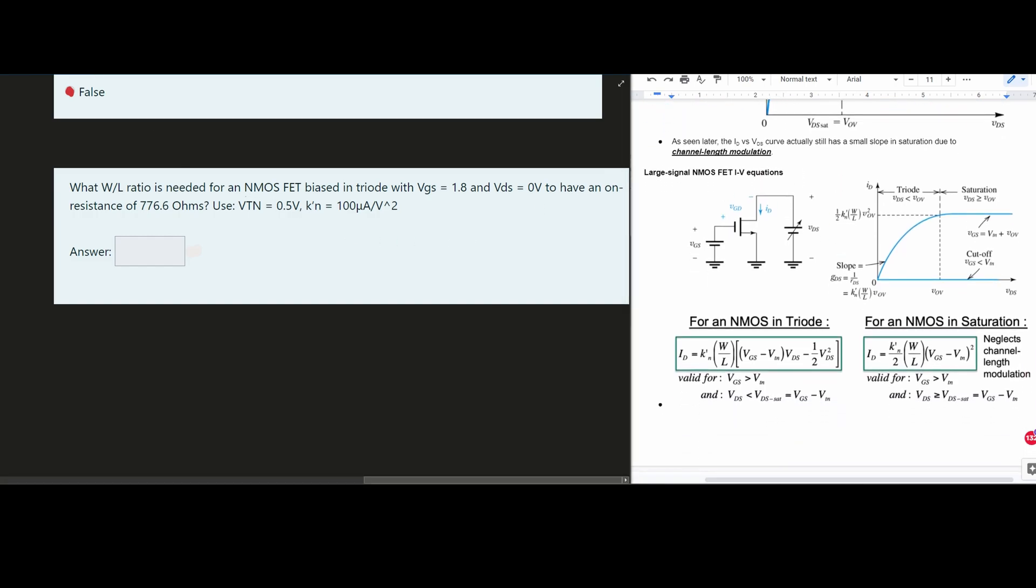So we have an N MOSFET biased in triode. This is the equation that we're going to be using.